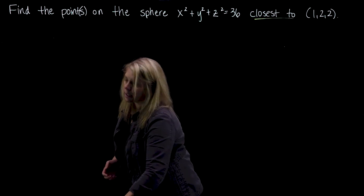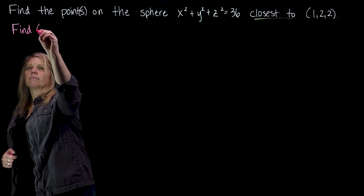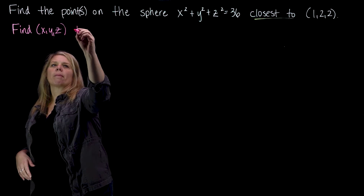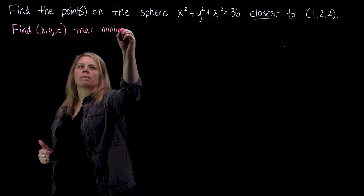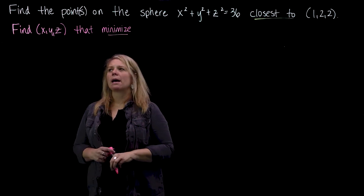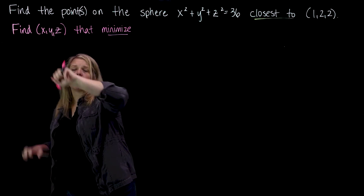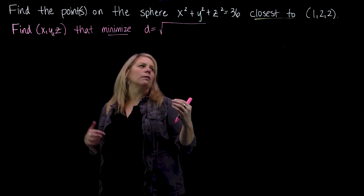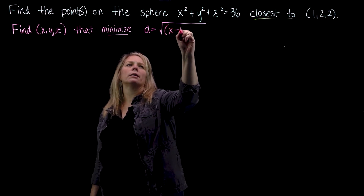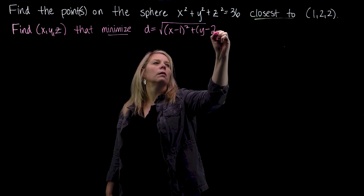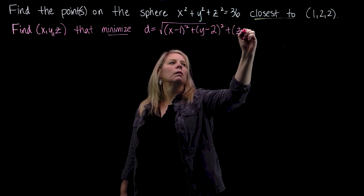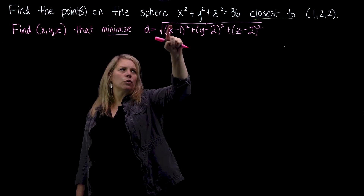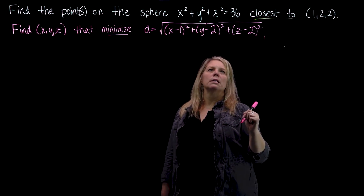We want to find points, so we're going to find x, y, z, and we want to minimize a distance formula — minimize the distance from this arbitrary unknown point x, y, z to this other point. So I'm just going to write down a distance formula: x minus 1 squared — I'll do x minus 1 — with the constraint that x² + y² + z² = 36.